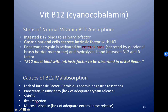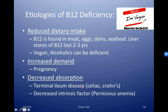B12 deficiency can result from reduced dietary intake — it's common in strict vegans because they're not taking in meat, eggs, dairy, etc., and B12 stores run out after two to three years. Alcoholics can also be deficient in B12 because of a poor diet in general. You can have increased demand for vitamin B12, which can happen in pregnancy. You can also have decreased absorption of vitamin B12 if there are problems in the terminal ileum, which is common in celiac and Crohn's — though iron deficiency is more common than B12 in Crohn's. The last cause is decreased intrinsic factor, also known as pernicious anemia.